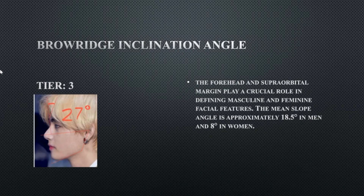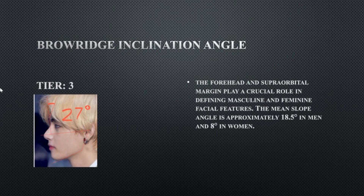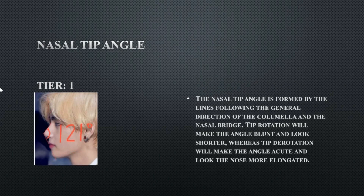His brow ridge inclination is at 27 degrees, within the normal range, but his forehead is a little too sloped back — not ideal and somewhat Neanderthalic. You want a forehead that's not too sloped back and not too forward or too rounded. His is just too sloped back, so it's unideal but still within reason. His nasal tip angle is 121 degrees, which is perfect and within the ideal range. He does have an upturned nose, but his nasal tip is not too upturned by any means.